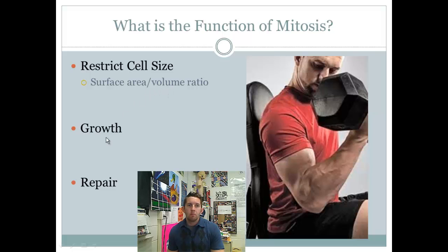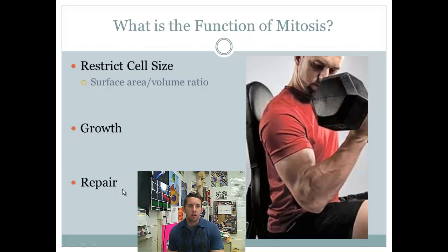You need mitosis for growth — going from an infant to an adult, you obviously have more cells as an adult. You're growing, you have more cells. And for repair: when you damage your muscle cells or get a cut on your skin, mitosis is going to repair that. We'll talk in later screencasts about how that repair actually happens.